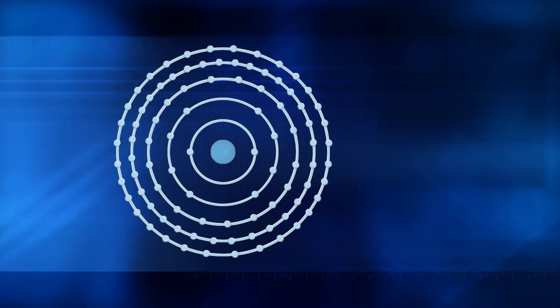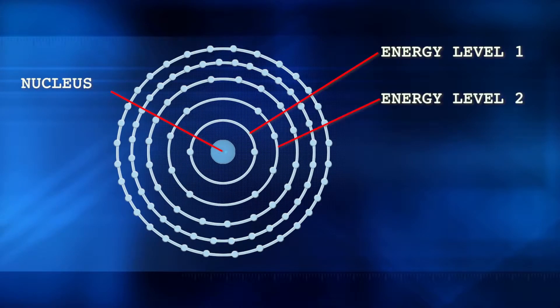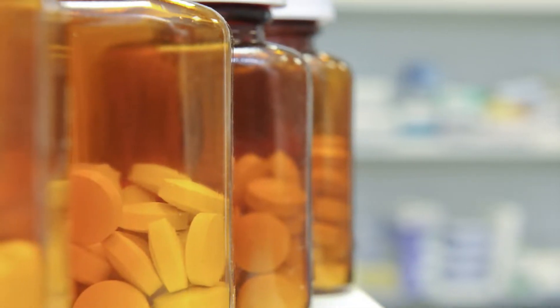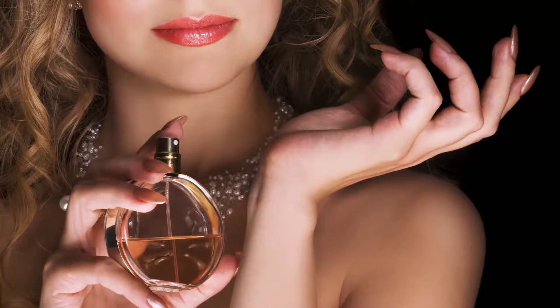This Bohr model shows the same information in graphical form, and it's available in our Chemistry Matters toolkit. You might be wondering why we care about periodic trends. Understanding periodic trends helps us to predict the properties of an atom and to determine how it will chemically react with other atoms to produce all sorts of useful compounds like medicines, fertilizers, and cosmetics.